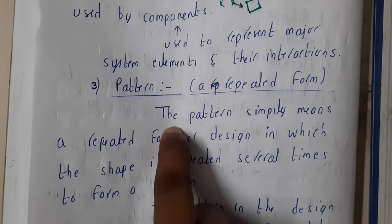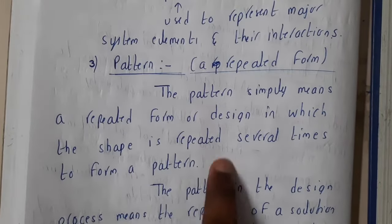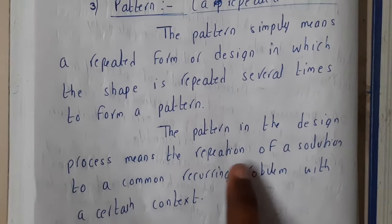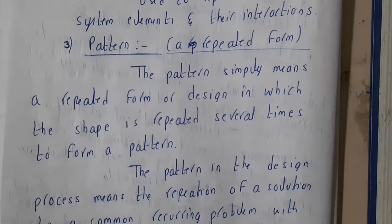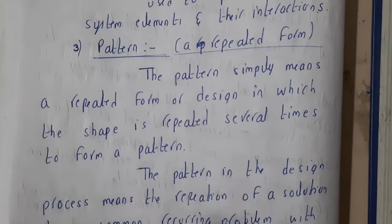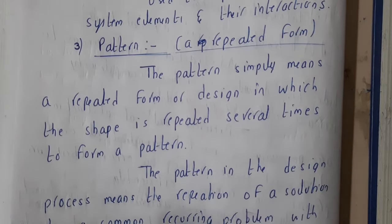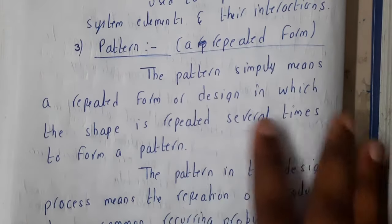Similarly, patterns. A pattern simply means a repeated form or design in which a shape is repeated several times. In the design process, a pattern means repetition of a solution to a common recurring problem within a certain context. When designing something with multiple components, the pattern repeats. In those situations, it is always better to create a class and inherit the properties instead of writing them again and again.